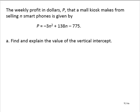Find and explain the value of the vertical intercept. So to find the vertical intercept, we let n equal 0. Then P would equal negative 3 by 0 squared plus 138 by 0 minus 775.